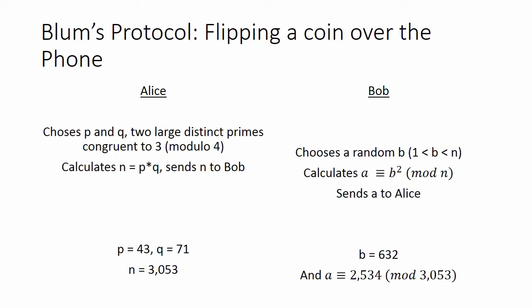Alice's protocol describes how two parties that do not trust each other can fairly flip a coin over the telephone.